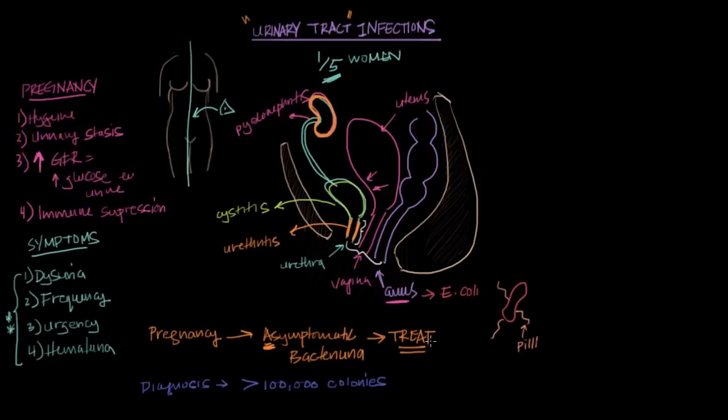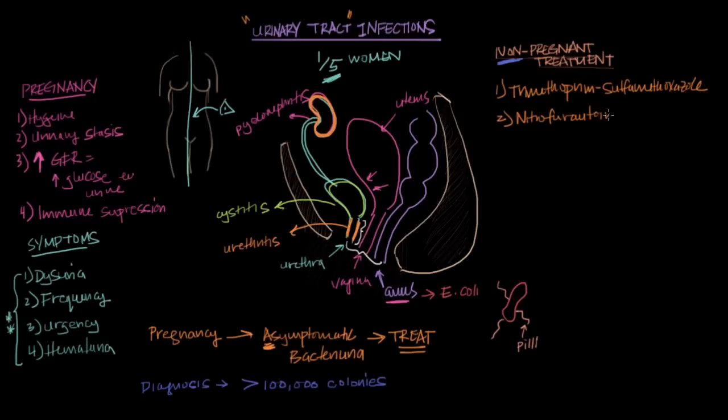I want to mention one other important difference in UTIs in non-pregnant versus pregnant women, and that is treatment. So in a non-pregnant woman, or even a man for that matter, your choice of treatment is pretty diverse. It could be something like trimethoprim-sulfamethoxazole, I know it's a mouthful. Another very popular treatment is nitrofurantoin. And a third popular choice is ciprofloxacin. And there are other less commonly used antibiotics also available for your choice.